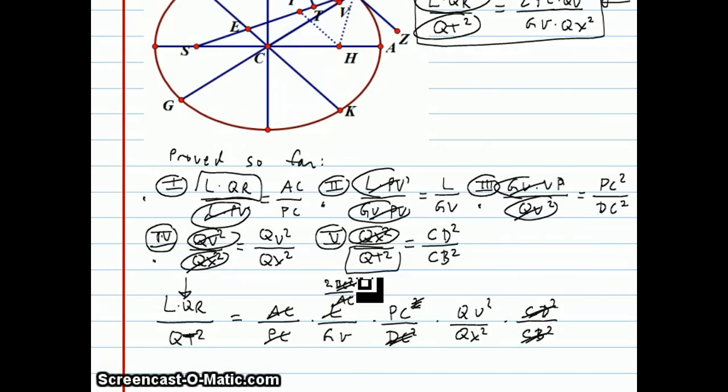Well, when the smoke clears, what we're going to be left with is, well, all this left on top is the 2, the PC, and the QV squared. And all this left on the bottom is the GV and the QX squared. So this is what we're left with.